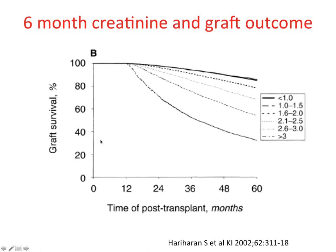In every chronic kidney disease, serum creatinine, degree of proteinuria, and blood pressure control are important prognostic factors — chronic allograft dysfunction is no exception. This analysis showed that the six-month creatinine has a strong association with allograft outcome. If you have a high-quality kidney with a good creatinine at six months, graft survival is excellent. If you have a poor-quality kidney with a high creatinine at six months, graft survival is poor.